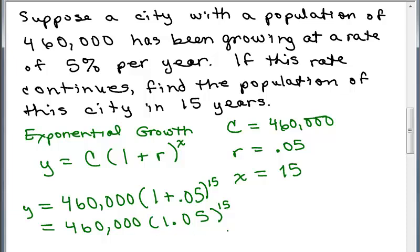If you have a graphing calculator, you could enter it in exactly as it's shown here. If you don't have that, make sure you do order of operations. Do 1.05, raise it to the 15th power and get that answer and then multiply by 460,000.